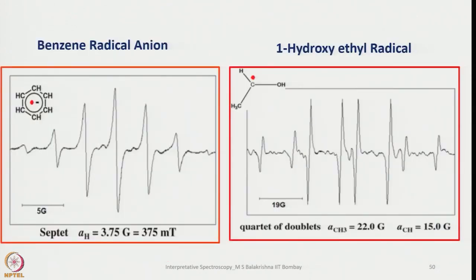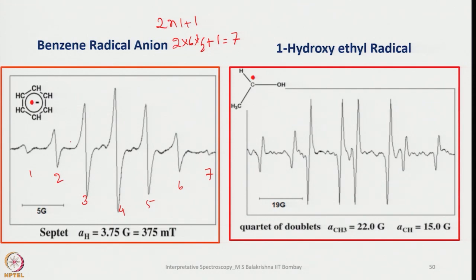Now let us look at the benzene radical anion. This electron would couple with 6 equivalent hydrogen atoms, giving 7 lines. Looking at the EPR spectrum of benzene radical anion, we observe it with a hyperfine coupling constant AH of 3.75 Gauss.